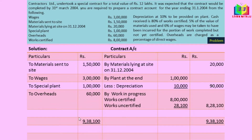Now it is time to balance the contract account. Balancing gives us the notional profit of 3 lakh 28,100. If the balance appears on the debit side we write notional profit; if it appears on the credit side it is a notional loss. This notional profit is to be transferred to the profit and loss account based on the percentage of work certified on contract price.